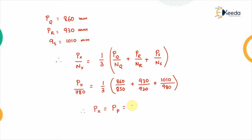Solving for PX, the value comes out to be 793.84 millimeters, which can be roughly taken as 794 mm. This is the value of the rainfall that was missed by the rain gauge station which was not able to record that data.